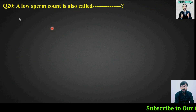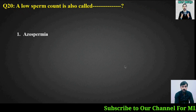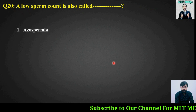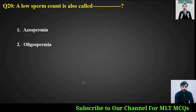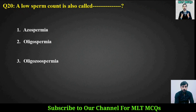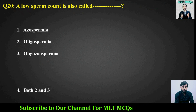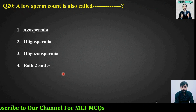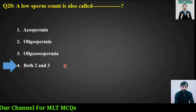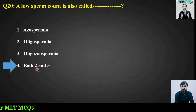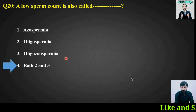MCQ number twenty: A low sperm count is called what? Options are: azoospermia, oligospermia, oligozoospermia, or both two and three. The right answer is both two and three — a low sperm count is called oligospermia and oligozoospermia.